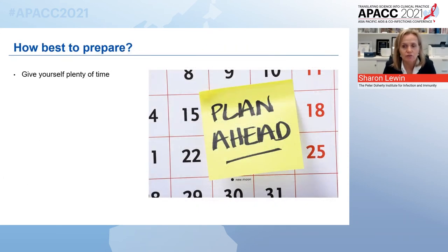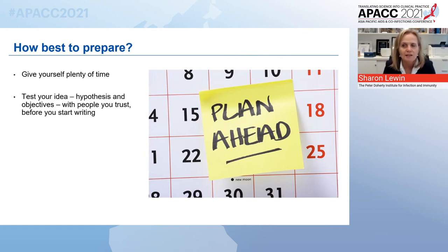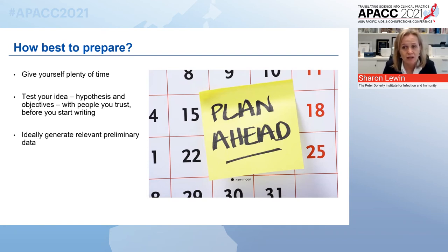Preparation is absolutely everything. Give yourself plenty of time — start thinking about a grant six months ahead of submission and never rush it or try to polish it off the night before. Always test your idea with other people: just your hypothesis and objectives, essentially the front page of the grant. Test it with people you trust who know the area before you start writing, because it's much harder to redo a ten-page grant than to redo one page. Relevant preliminary data is also very important; in the Australian system, very solid preliminary data is almost an absolute requirement.